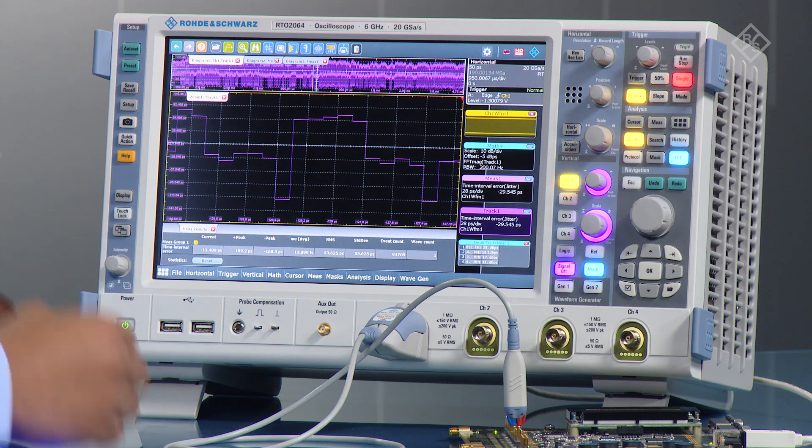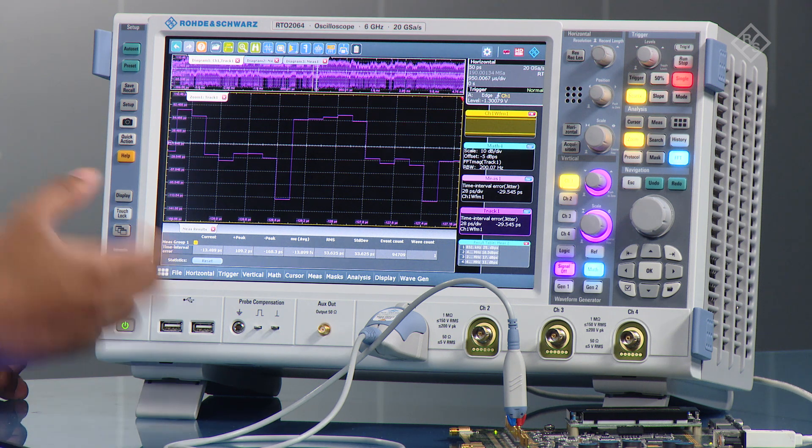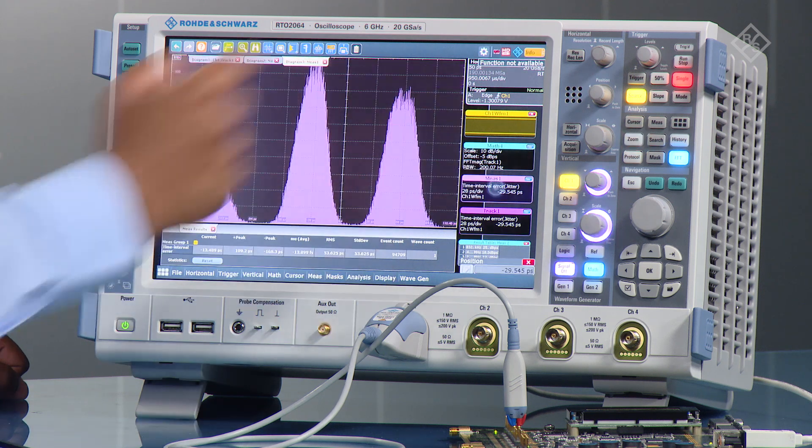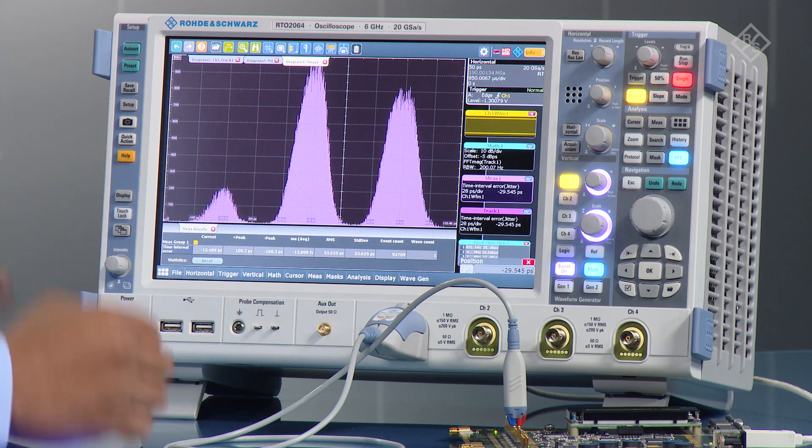What you can do now is also do further analysis on this signal, so you could do things like a histogram measurement. You can actually display that so you see the distribution of that TIE measurement over that period.